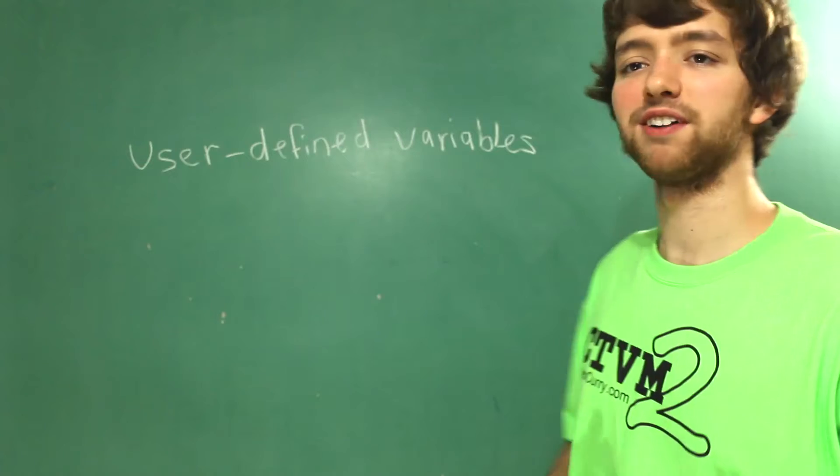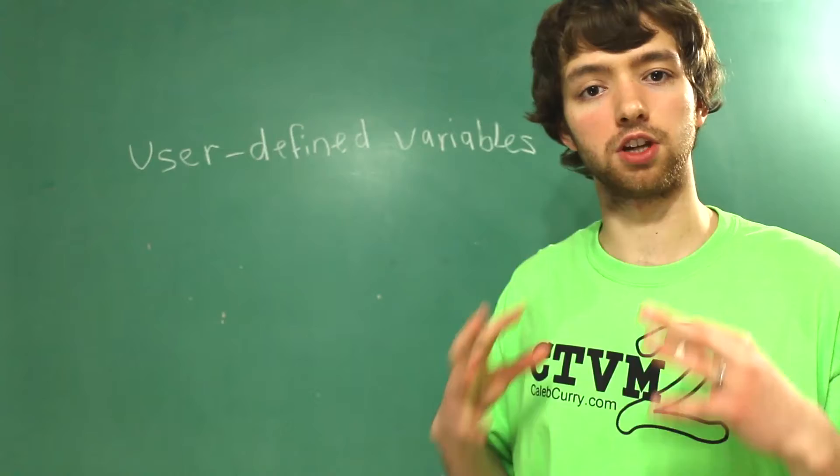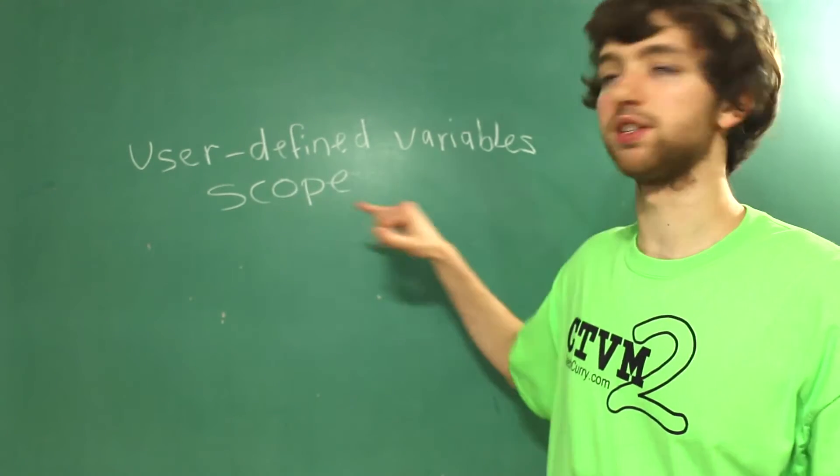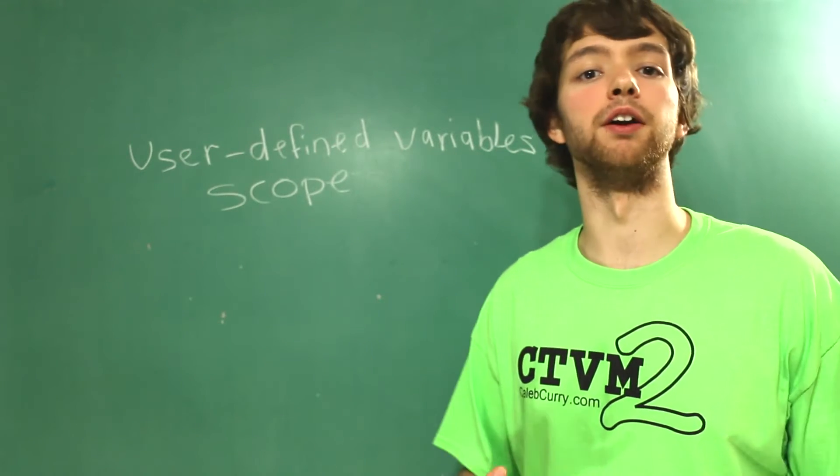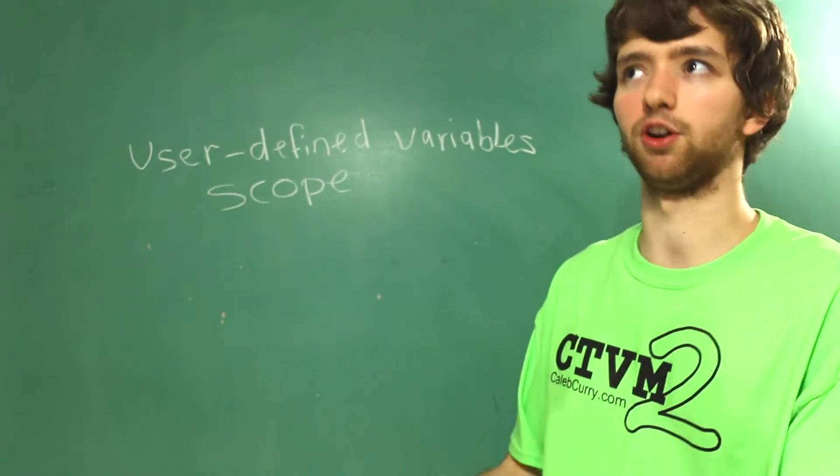User-defined variables are a type of variable that have a very small scope. Whenever you study variables, I can guarantee you this word will come up. It talks about the lifetime of the variable. When you make one of these user-defined variables, it doesn't last for eternity.